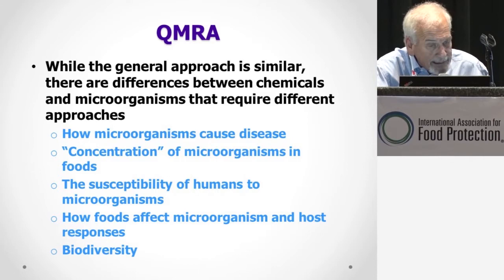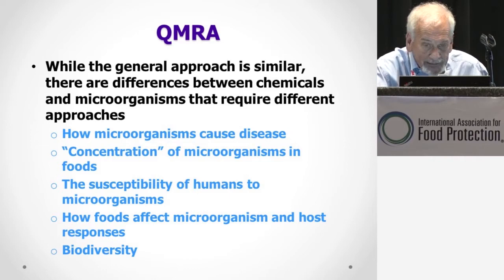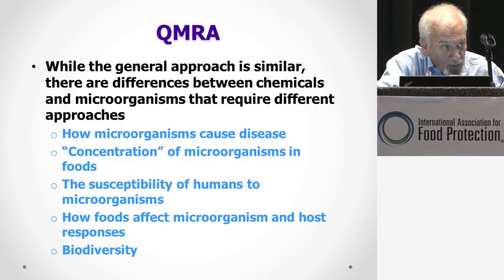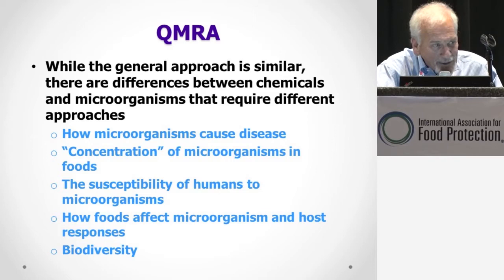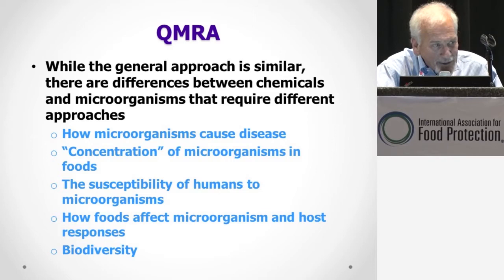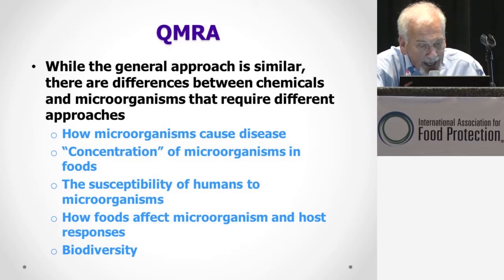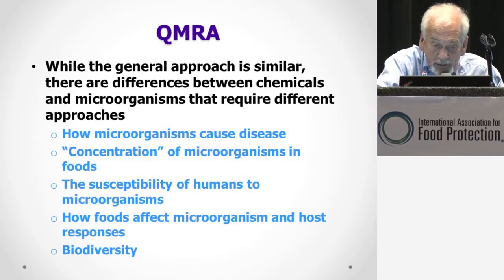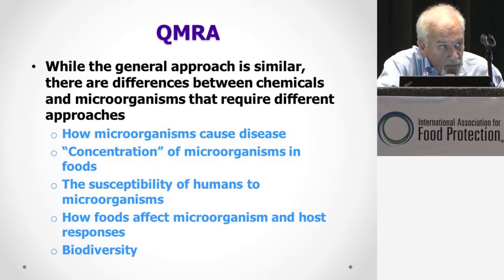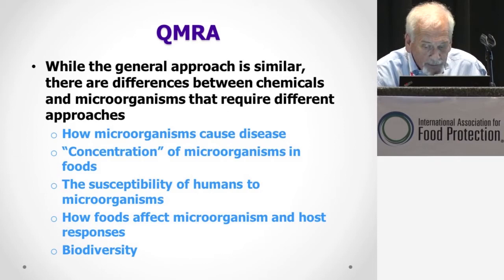The general approach is similar, but I want to highlight some of the differences between chemicals and microorganisms that require different approaches. It's important to understand how microorganisms cause disease, and the concentration — or more theoretically, the population density — is a critical factor. We have huge differences in the susceptibility of humans to microorganisms, and the foods that a microorganism is in can affect both the microorganism and also the host responses. Throughout my talk I'll discuss a lot about biodiversity.